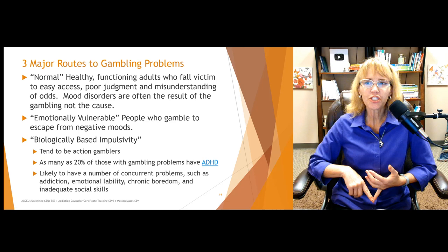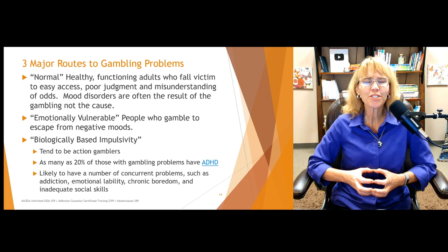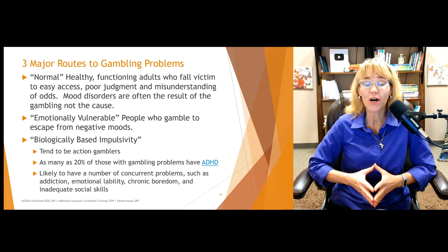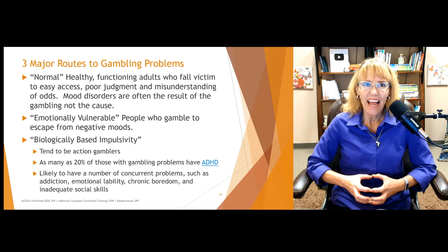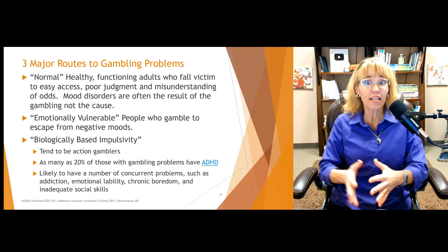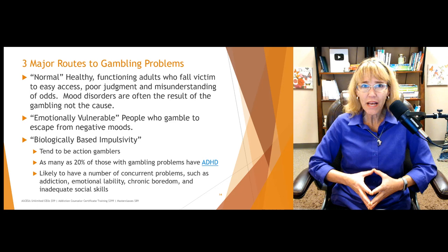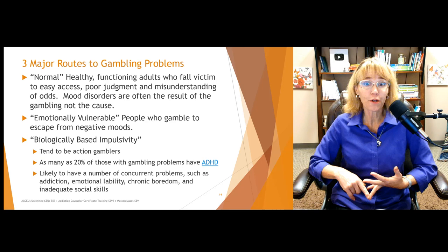There are three major routes to gambling problems. The first is normal, healthy, functioning adults who fall victim to easy access, poor judgment, and a misunderstanding of the odds. There is a lot of magical thinking and superstitious reinforcement — some people win a few times and think they can't be stopped, but they will eventually gravitate toward the mean. For these individuals — often biologically male — mood disorders are often the result of gambling rather than the cause, since they engage in gambling as a means of socialization and relieving boredom.